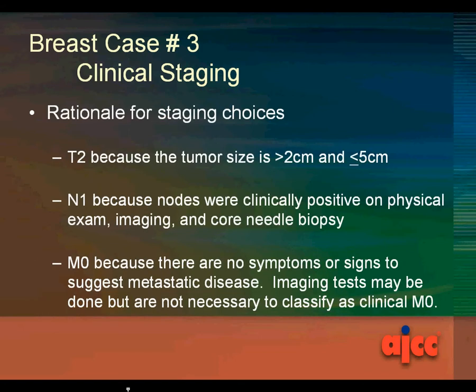The rationale for the staging choices: it's a T2 because the tumor size is greater than 2 centimeters and less than or equal to 5 centimeters. N1 because the nodes were clinically positive on physical exam, imaging, and core needle biopsy. M0 because there are no symptoms or signs to suggest metastatic disease. Imaging tests may be done but are not necessary to classify as a clinical M0.